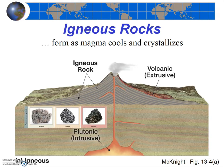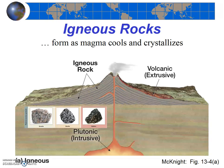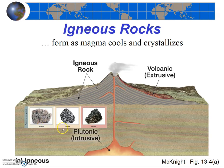Intrusive igneous rocks form as magma cools slowly deep within the earth. Since the magma is deep in the earth, it's insulated from the cool surface temperatures and thus cools slowly. The slow rate of cooling allows the atoms in the magma to get where they need to go to form crystals, so the crystals have a longer time to form and end up being quite large — large enough to see with the naked eye. Examples include granite, diorite, gabbro, and peridotite.